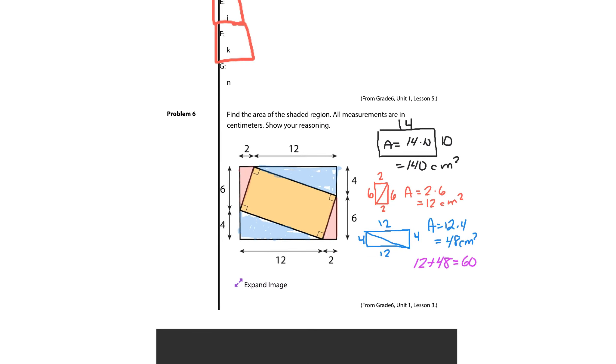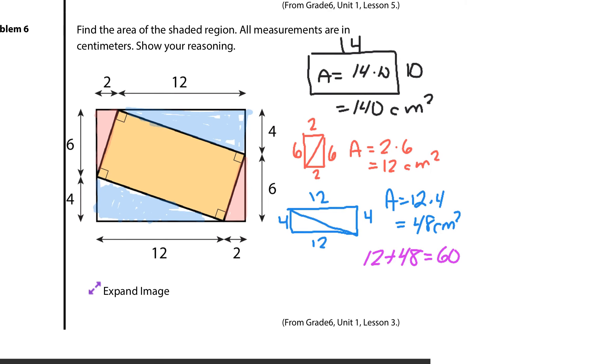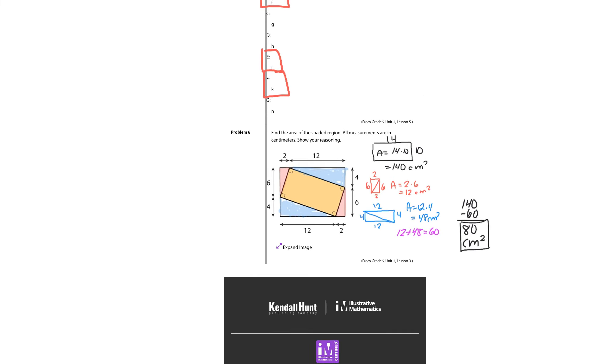And to get what that orange area is there, how about we take 140 minus 60, which produces a result of 80 square centimeters. So we found the entire area, and that's using combining triangles to get rectangles to subtract those. And that is it for this Grade 6 Unit 1 Lesson 6 Practice Problems Review.